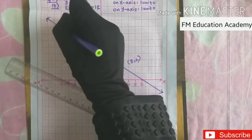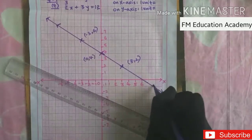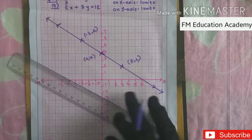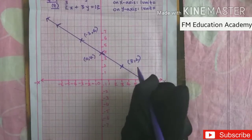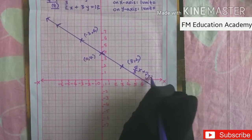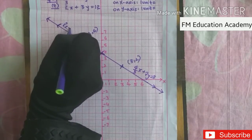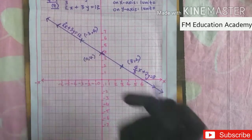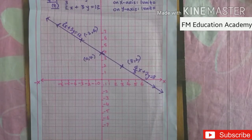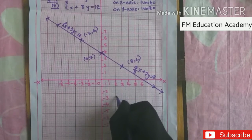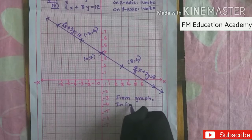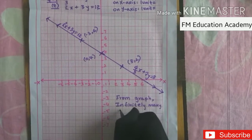The first equation (4/3)x + 2y = 8 is labeled on one side of the line, and the second equation 2x + 3y = 12 on the other side. All three points lie on the same line, confirming infinitely many solutions — the lines are overlapping.